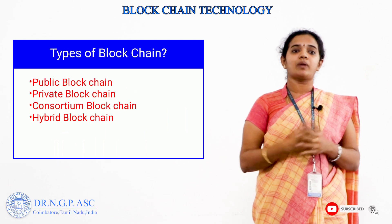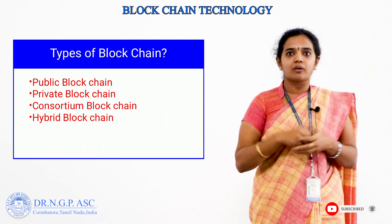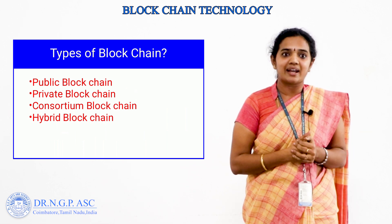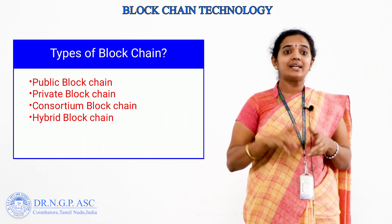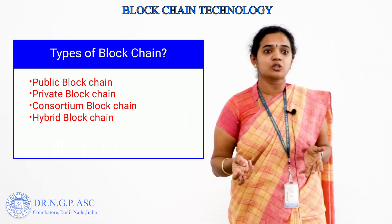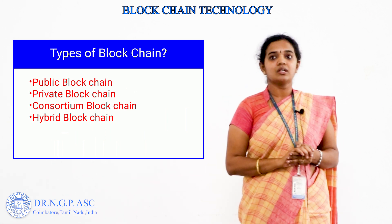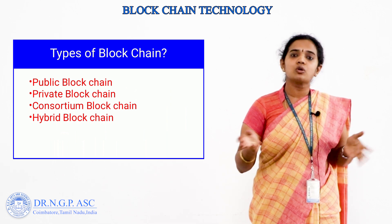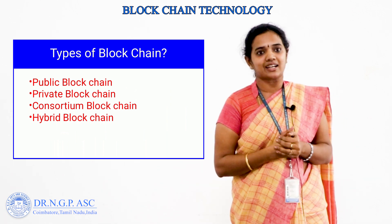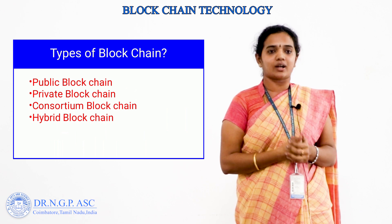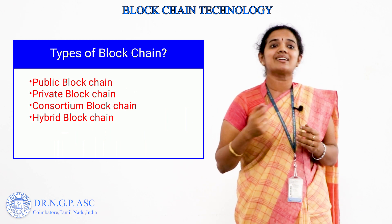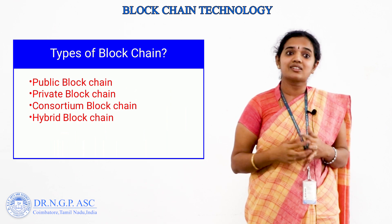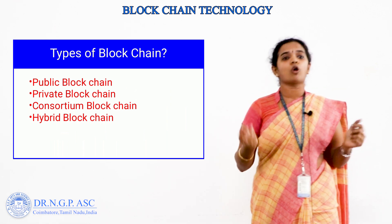The second type is private blockchain, which is used within organizations or enterprises where only selected members can participate in the blockchain network. The third type is consortium blockchain, used in banking sectors and other government organizations. It is a semi-decentralized type where more than one organization manages a blockchain network.